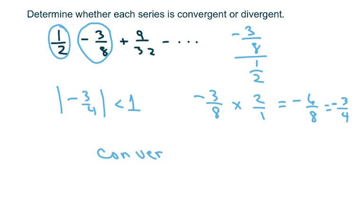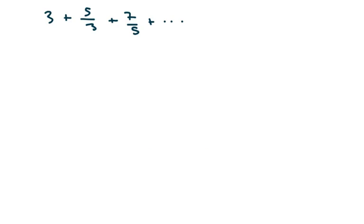So I just took the next term divided by the nth term. You could have also checked this one and taken this term and divided it by that. If this is your R, your ratio, if the absolute value of ratio is less than 1, then it's convergent.